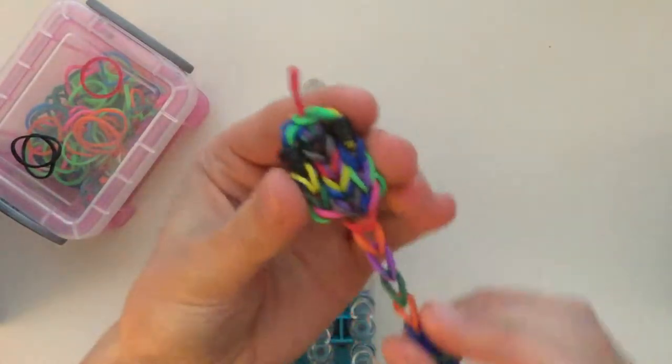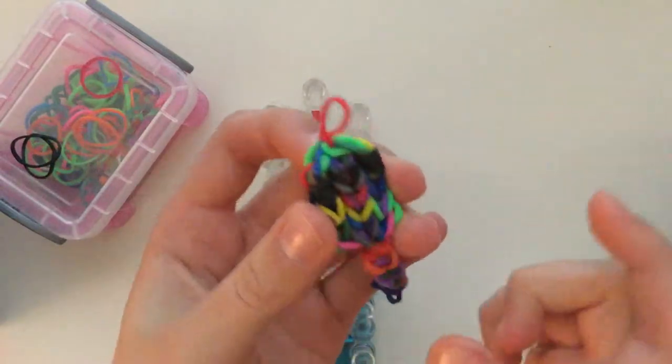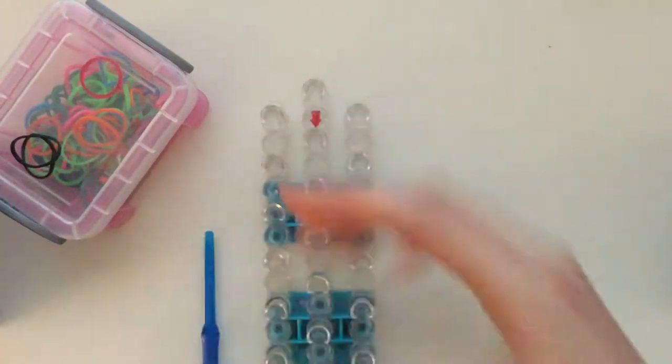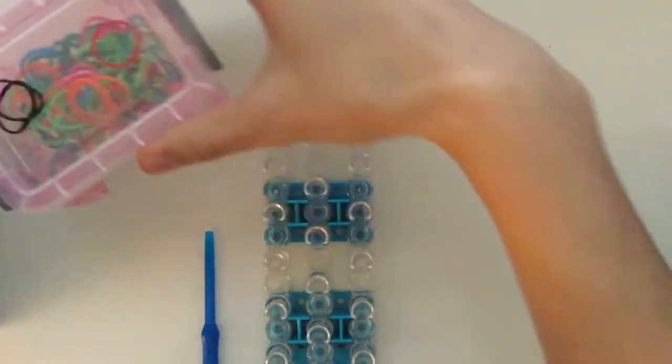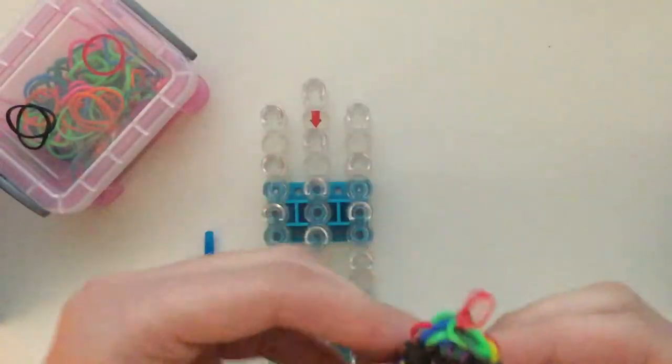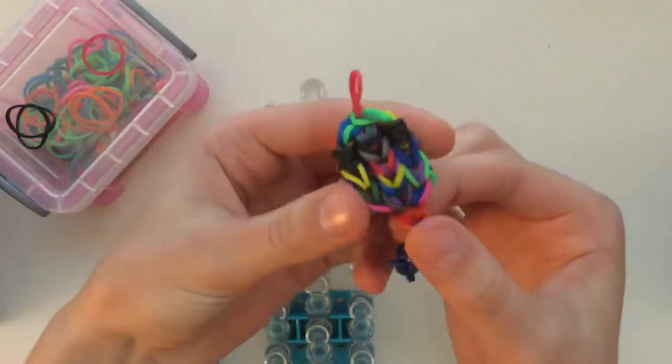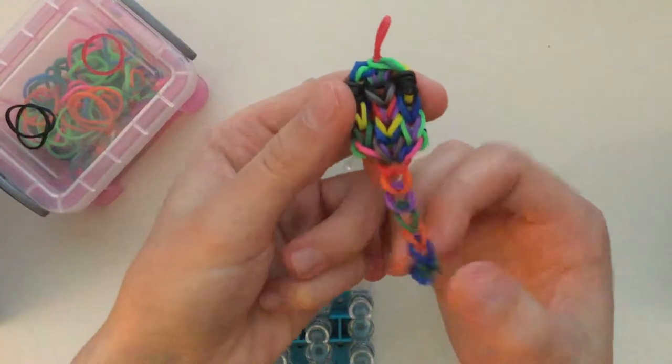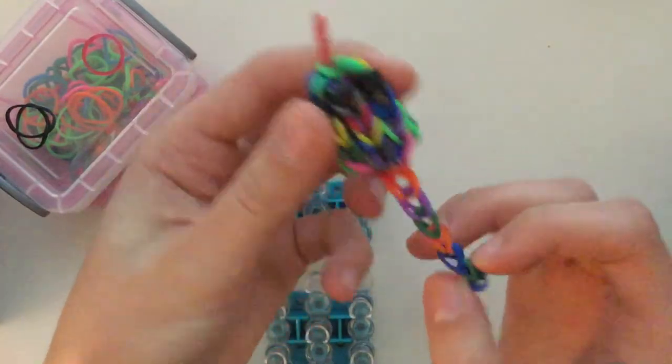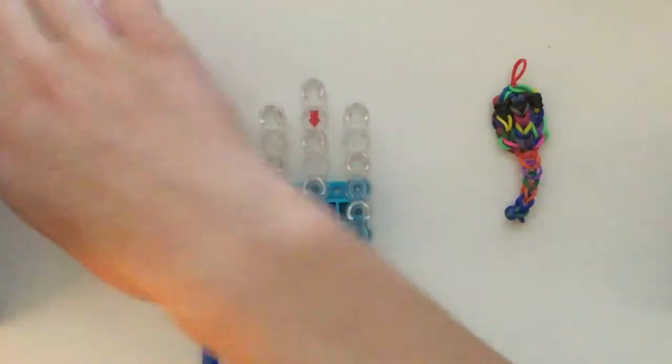For this little snake, you're going to need one red band, two black bands, and a box of colorful bands. My guess is that you only need at least 20. I could be wrong, it could be less, it could be more. Somewhere around there, a little bit more probably.